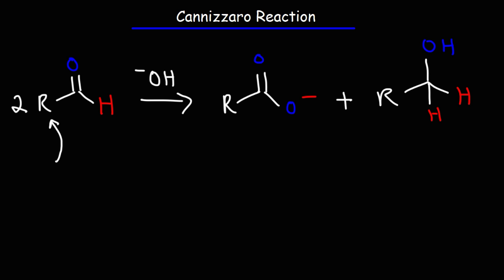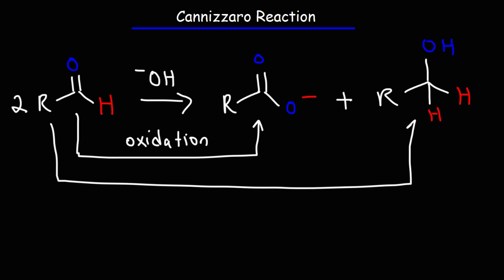The Cannizzaro reaction is a disproportionation reaction, where one aldehyde is oxidized and the other is reduced. So here we have oxidation occurring as we go from an aldehyde to a carboxylate ion. And we also have reduction occurring, where the other aldehyde molecule is reduced to an alcohol.